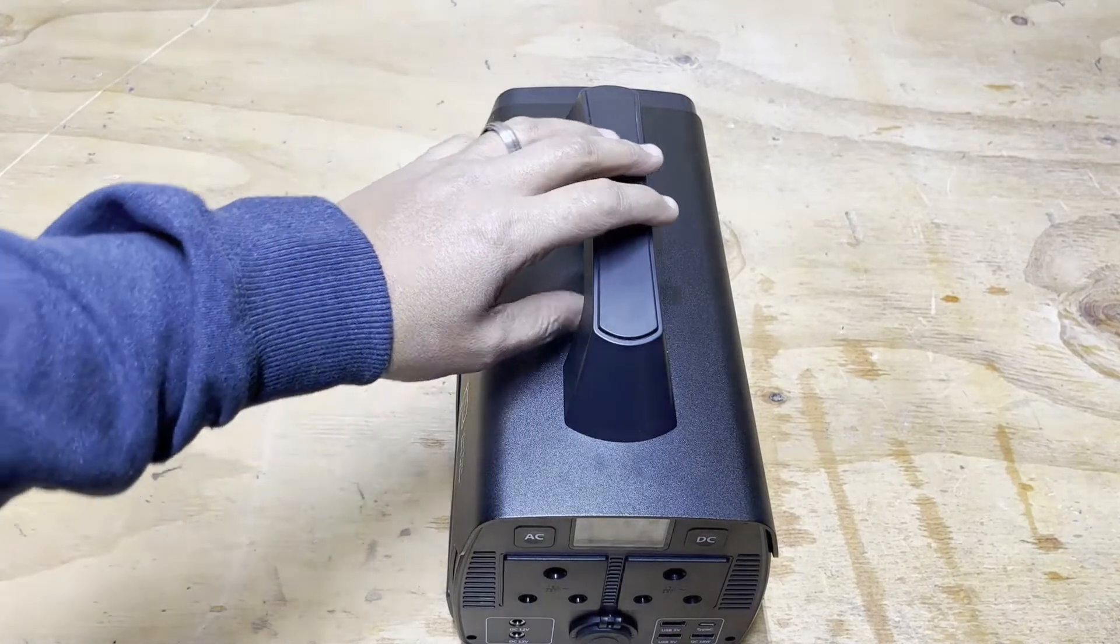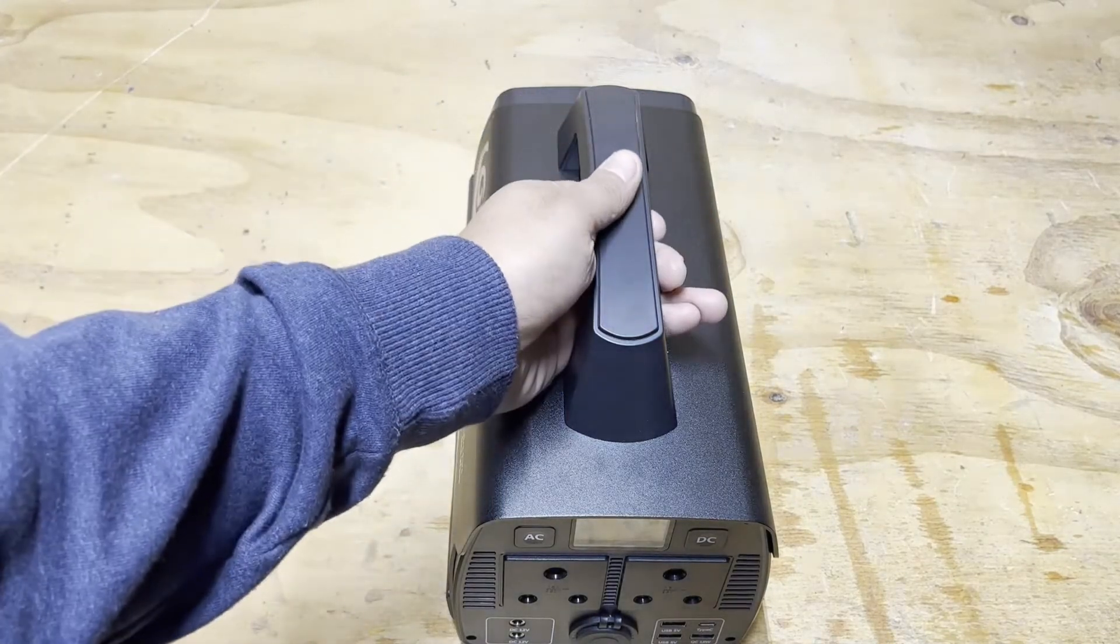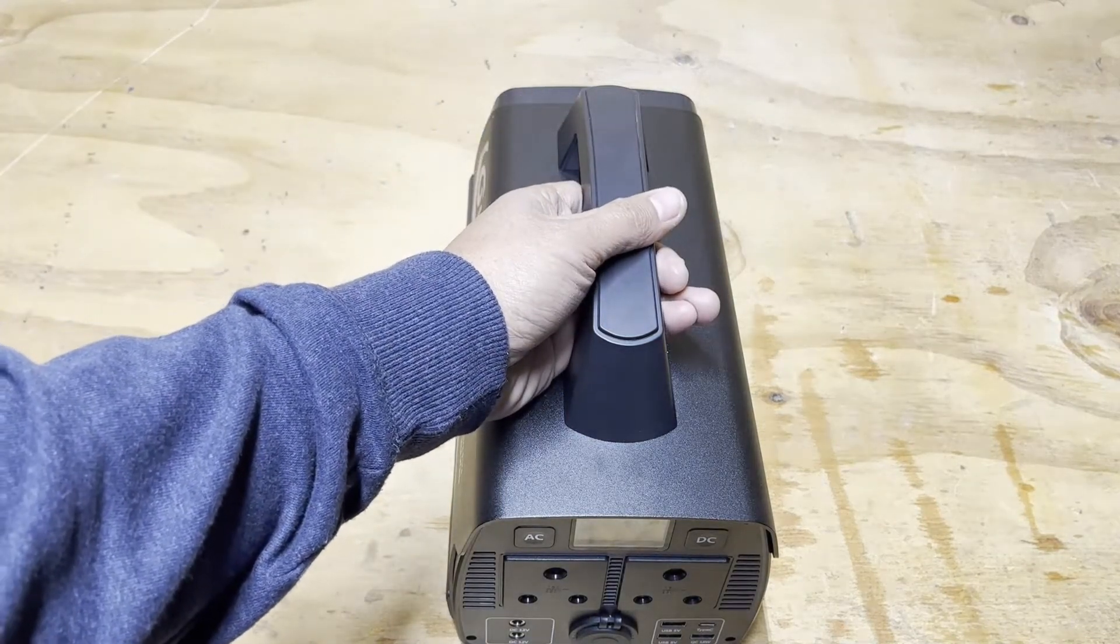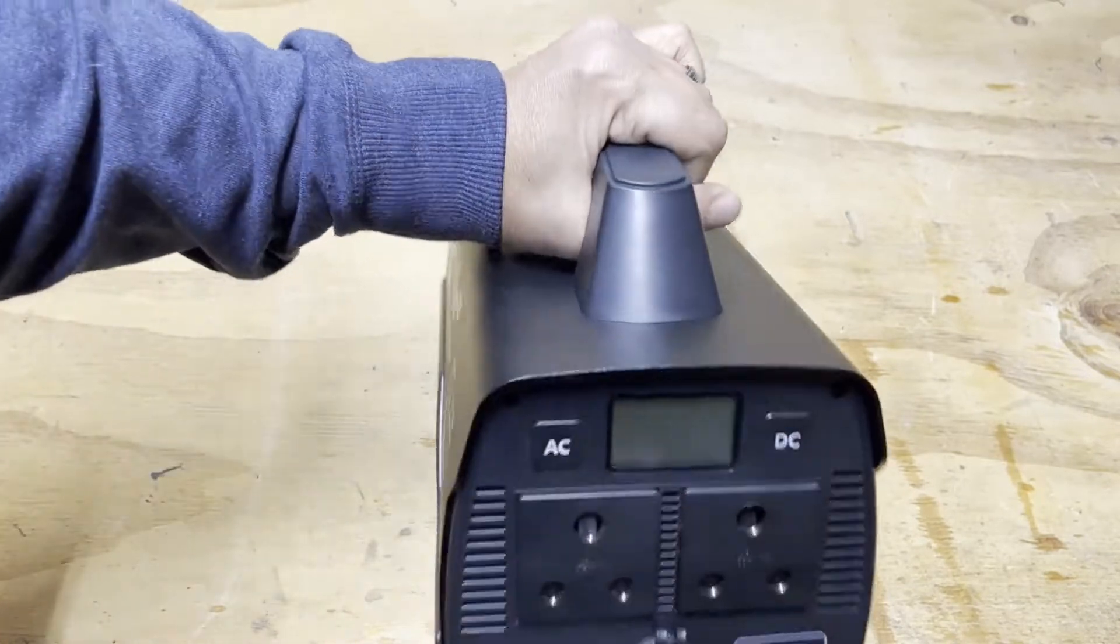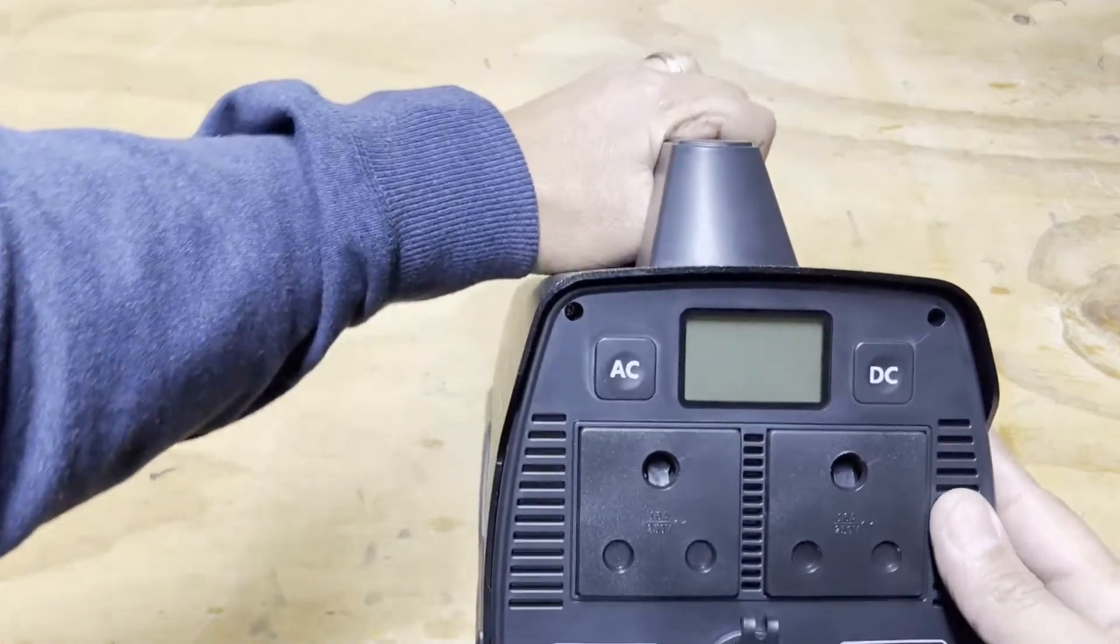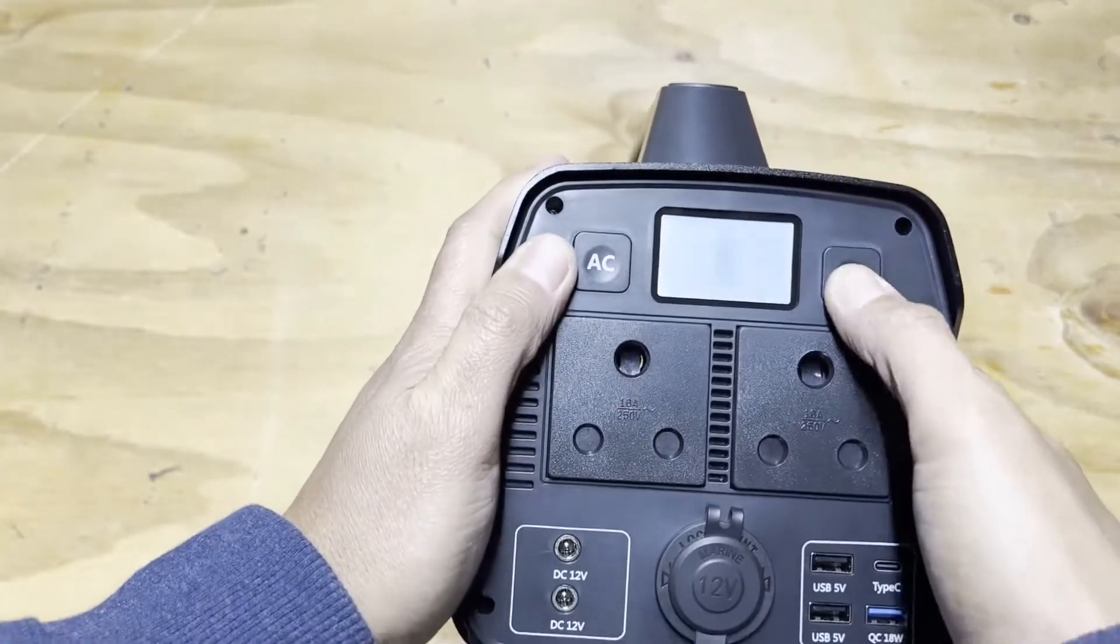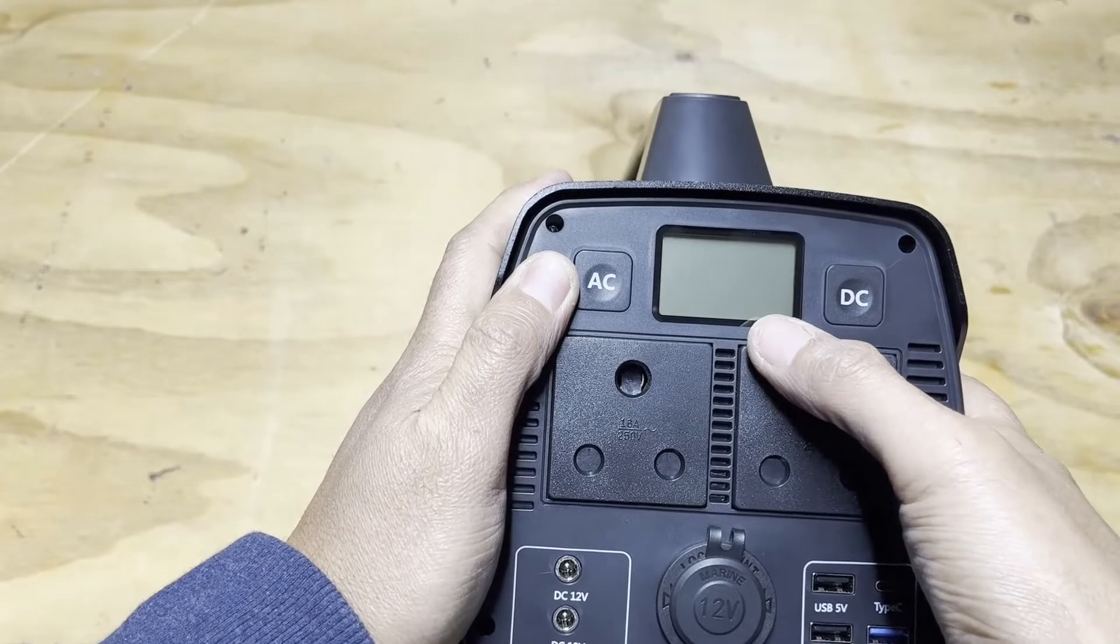Now that we have the unit fully charged, it took about three hours to charge fully. It was about at 64%, it's now 100%. Let's switch it on and see what it looks like. It's got this cool locking function, so if you press that you can see that the unit is locked there.